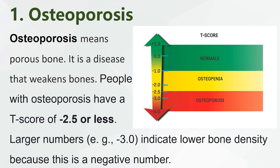Osteoporosis means porous bone. It is a disease that weakens bones. People with osteoporosis have a T-score of minus 2.5 or less. Larger numbers, e.g. minus 3.0, indicate lower bone density, because this is a negative number.